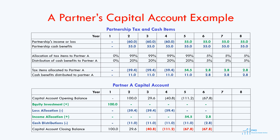In year 7, we have the same picture — no equity investment and no losses allocated to partner A. The income allocated and cash distributed to partner A are equal again, so they do not affect the capital account, and the deficit of 67.8 persists. Year 8 will be the same as year 7. So, we have built the capital account for partner A, and in the next few lessons, we will build the capital accounts for the tax equity partner and the sponsor in our financial model.